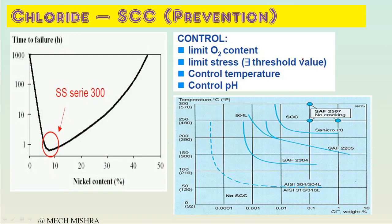Now, how to prevent CLSCC. CLSCC is most prevalent in 300 series stainless steels, which are more prone in the nickel content range of 10 to 18-19%. If we increase the nickel content, the susceptibility of CLSCC reduces - higher nickel alloys are basically resistant to CLSCC. So if we cannot change the process conditions, we have to go for metallurgy upgradation and increase the nickel content to avoid CLSCC.